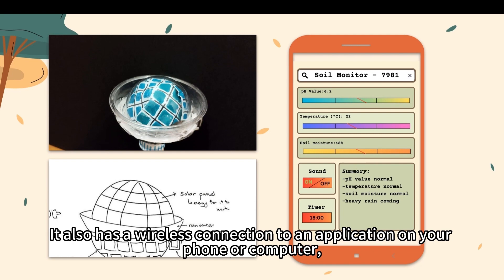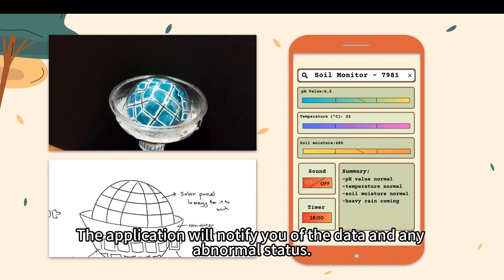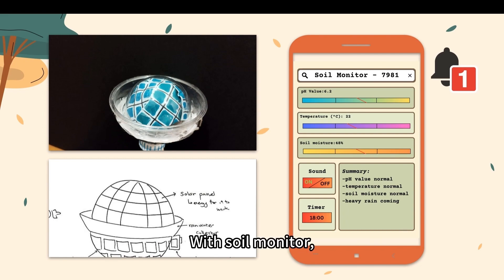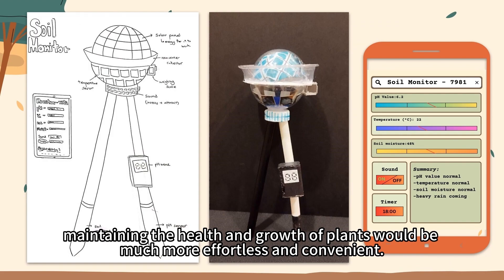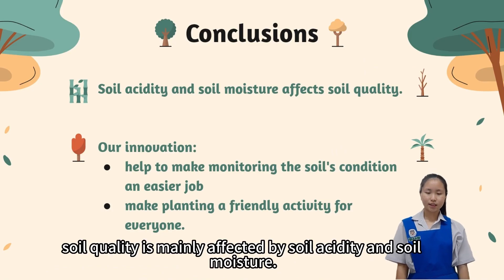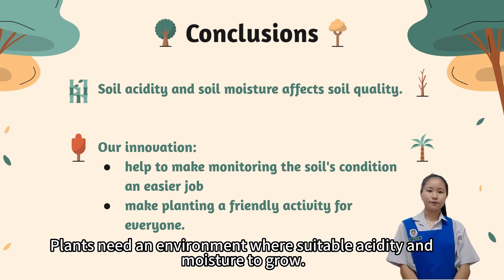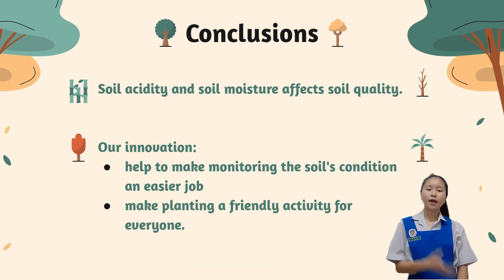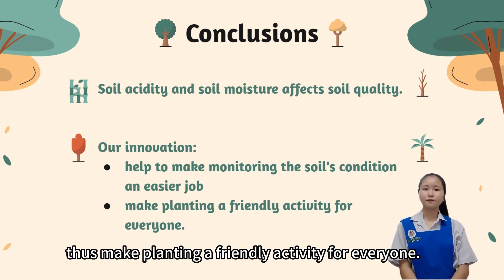It also has a wireless connection to an application on your phone or computer, so you don't have to go check it by yourself. The application will notify you of the data and any abnormal status. Through the soil monitor, maintaining the health and growth of plants will be much more effortless and convenient. Soil quality is mainly affected by soil acidity and soil moisture. Plants need an environment with suitable acidity and moisture to grow. Our innovation will help make monitoring the soil's condition an easier job, thus making planting a friendly activity for everyone.